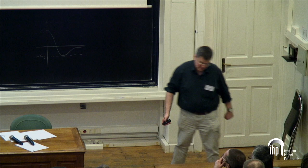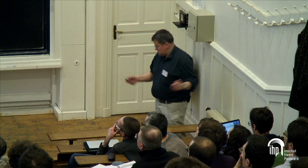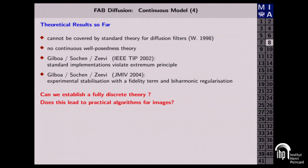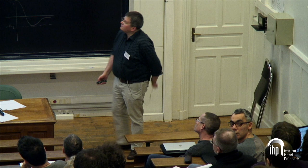What about the theory for FAB diffusion? It can be stated in one sentence: there is no continuous theory, due to the backward nature of the equation. Classical reasoning does not hold. People have tried standard explicit schemes but observe over- and undershoots that become very bad. Adding biharmonic regularization stabilizes things somewhat, but it is very difficult to interpret theoretically. The question is whether we can establish a fully discrete theory leading to practically useful and perhaps efficient algorithms.